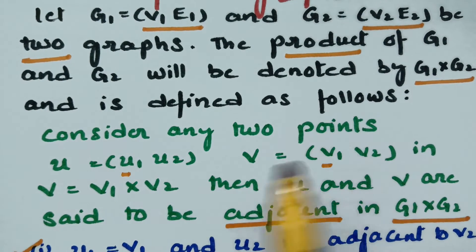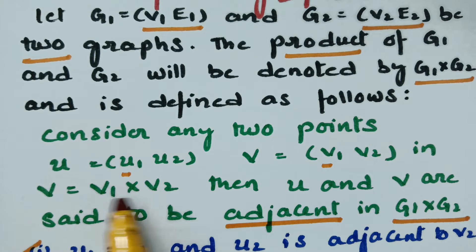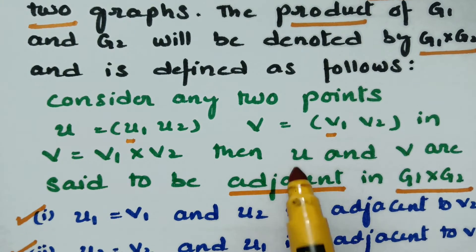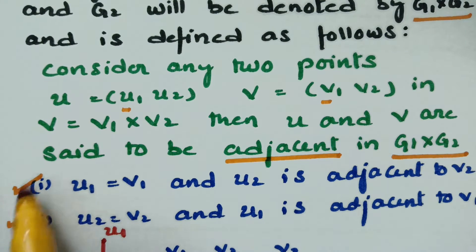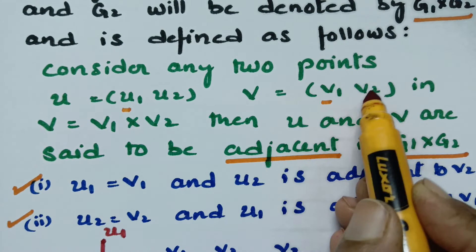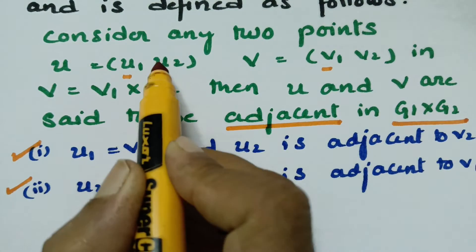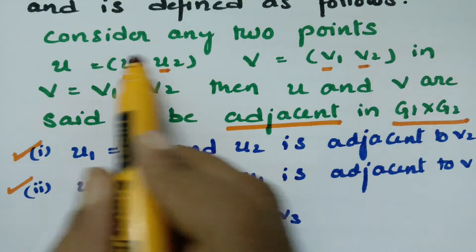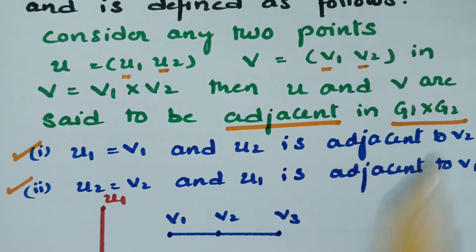Let us consider two points: U = (U1, U2) and V = (V1, V2) in V = V1 cross V2. Then U and V are said to be adjacent in G1 cross G2 if they satisfy two conditions. First, if U1 equals V1, then U2 should be adjacent to V2. Second, if U2 equals V2, then U1 must be adjacent to V1 in order to form an edge in the product graph.